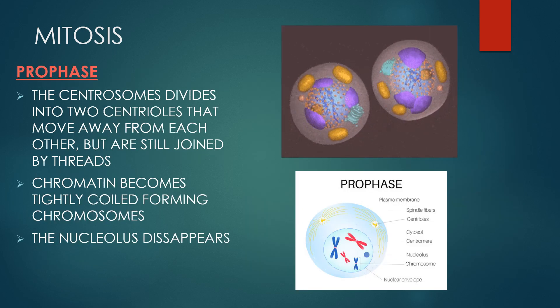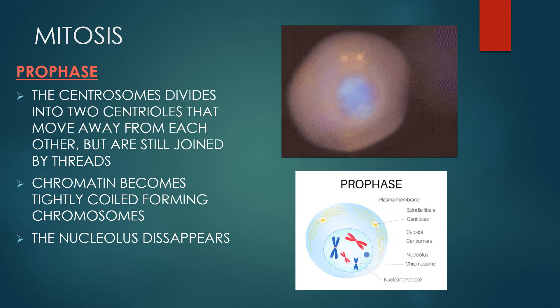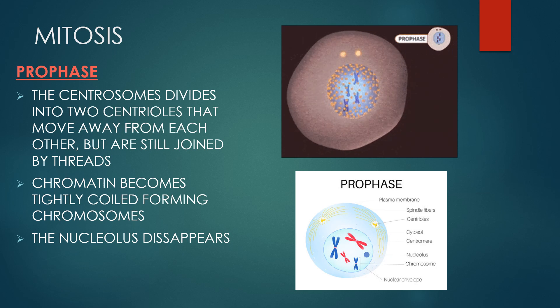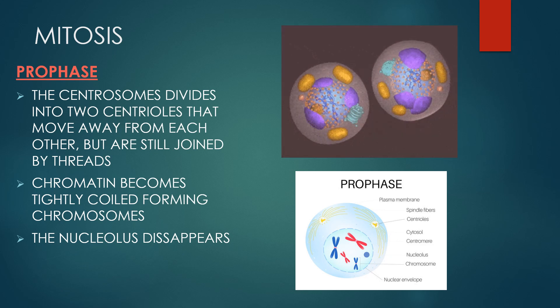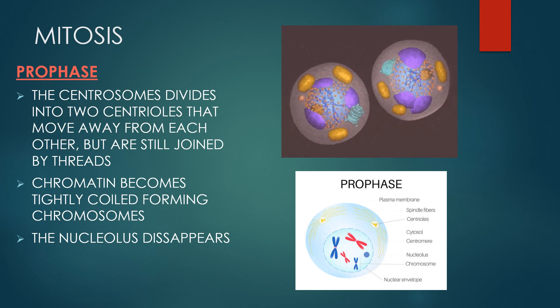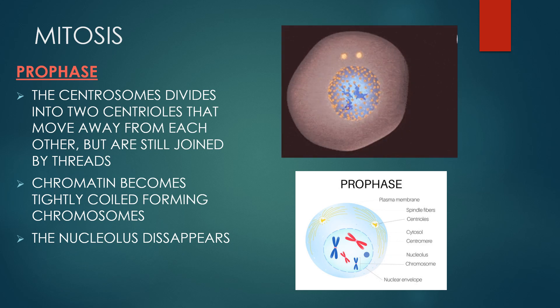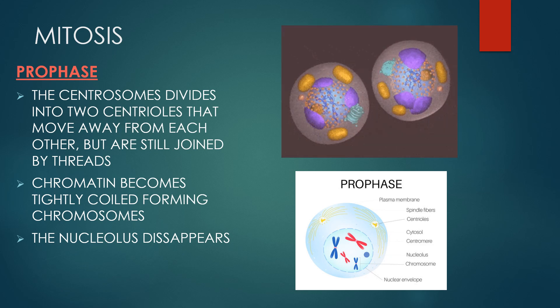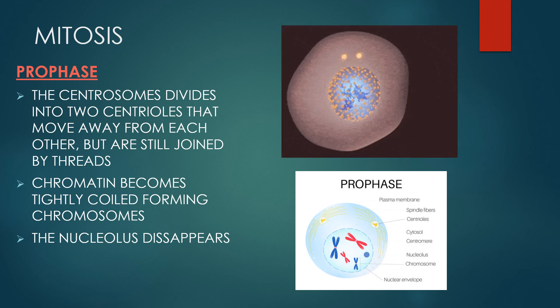Prophase is the first phase of mitosis, the process that separates the duplicated genetic material carried in the nucleus of a parent cell into two identical daughter cells. During prophase, the complex of DNA and proteins contained in the nucleus known as chromatin condenses. The centrioles divide into two centrioles that move away from each other but are still joined by threads. Chromatin becomes tightly coiled forming chromosomes and the nucleolus disappears.